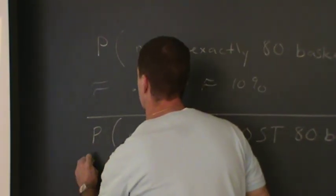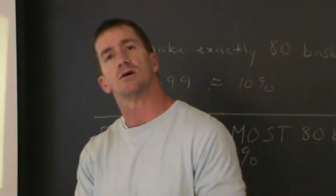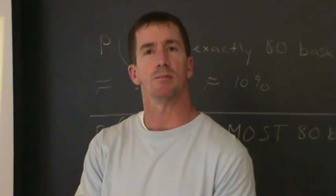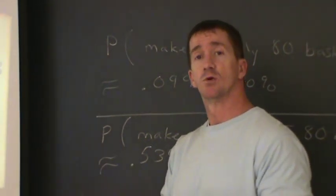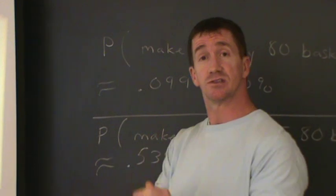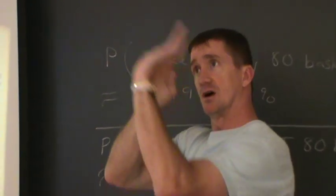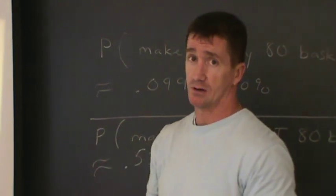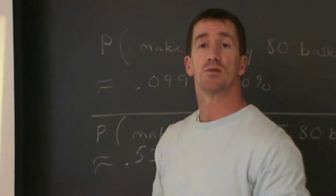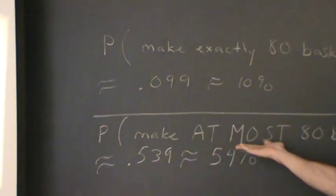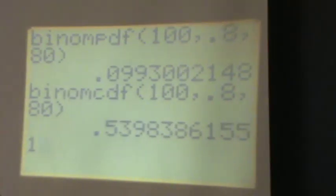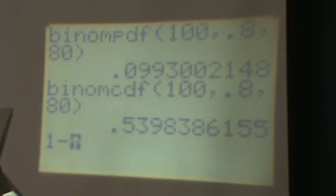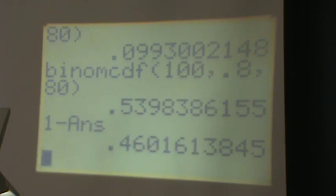And lastly, let's talk about the probability that someone makes more than 80 free throws. This person, who has an 80% success rate with 100 trials — what's the probability they make more than 80? Well, since the previous result was 'at most 80,' we can simply take 1.0 and subtract that last answer, and we get 46%.